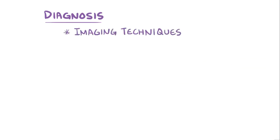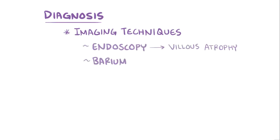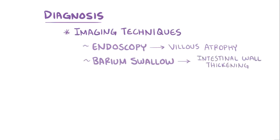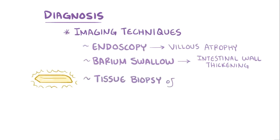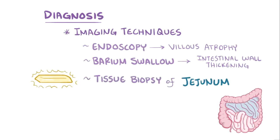In addition, imaging techniques can also be used to help make a diagnosis. For example, endoscopy can be used to see villus atrophy. A barium swallow might show intestinal wall thickening, which often happens with chronic inflammation. The ultimate gold standard though would be a tissue biopsy of the jejunum to directly visualize the intestinal inflammation and villus atrophy.